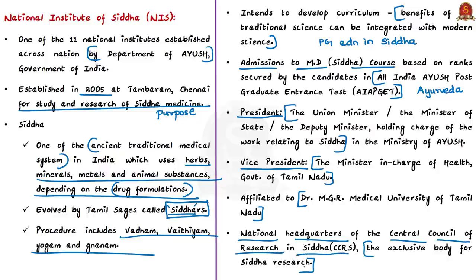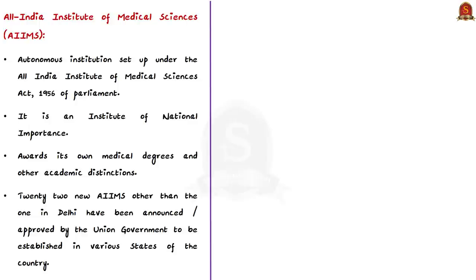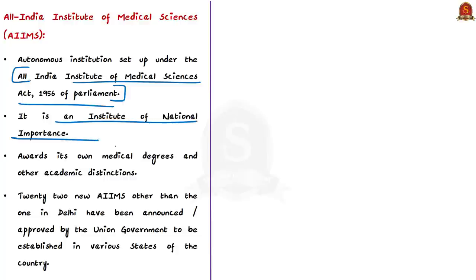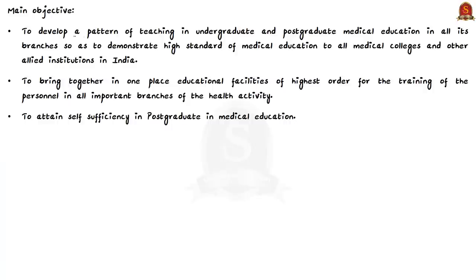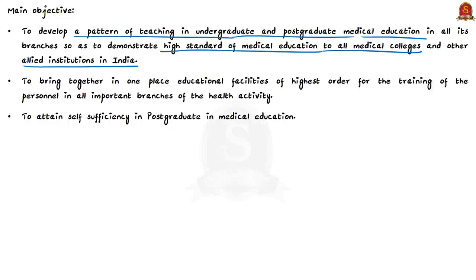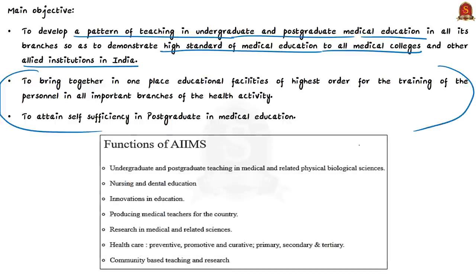The Institute is also the national headquarters of the Central Council of Research in Siddha, the exclusive body for research in Siddha. AIIMS is an autonomous institution set up in Delhi under the All India Institute of Medical Sciences Act, 1956, which provides for the establishment of AIIMS as an Institute of National Importance. The Institute awards its own medical degrees. Other than AIIMS Delhi, 22 new AIIMS have been announced by the Union government for establishment in various states. One objective of AIIMS is to develop patterns of teaching in UG and PG medical education to demonstrate high standards to all medical colleges and allied institutions in India.